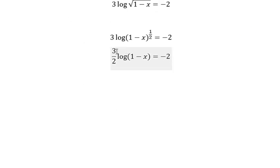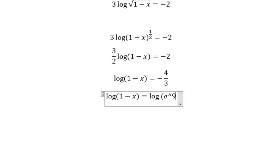Negative 2 divided by 3 over 2, you will get log 1 minus x equals negative 4 over 3. And now we can move it to log 1 minus x equal to log e to the power of negative 4 over 3.